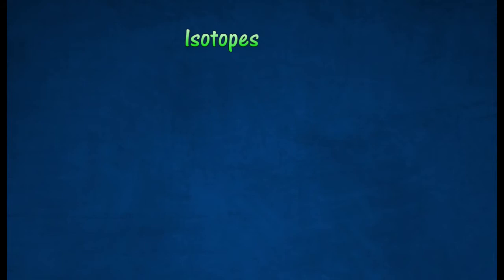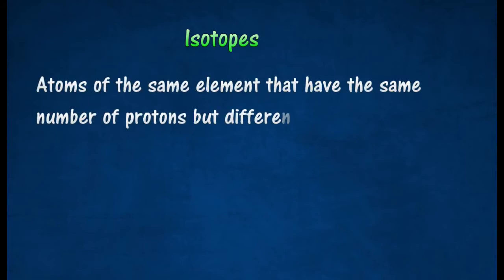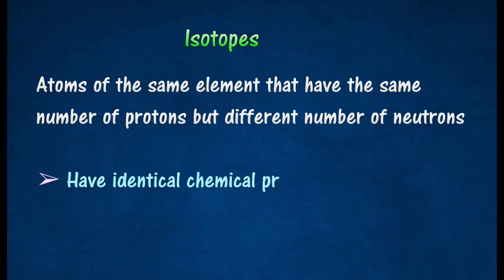Isotopes of an element are atoms which have the same number of protons but different number of neutrons. The isotopes will thus have the same proton numbers but a different nucleon number. Isotopes have identical chemical properties.